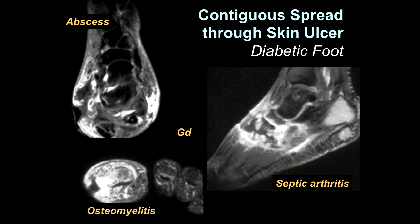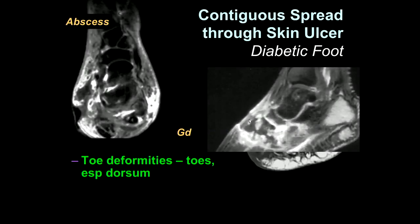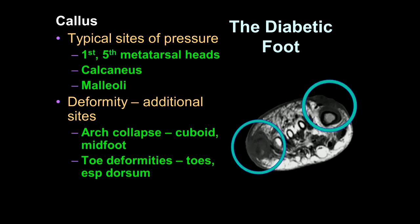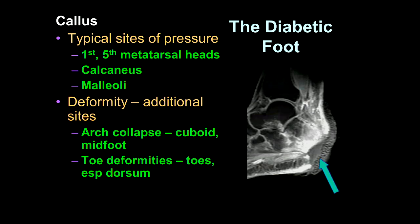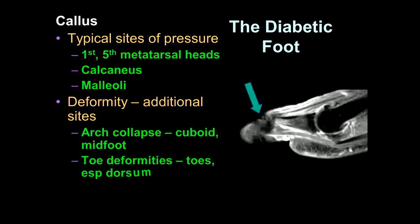The most common manifestation of contiguous spread in our population is in diabetic patients through ulcerations of the foot. These can occur in different locations based on footwear and other conditions. We typically see these in pressure points over the first and fifth metatarsal heads, over the calcaneus especially in bedridden patients, and over the malleoli. You also see them in areas of deformity — if patients have collapse of the arch, you'll see it under the cuboid; and if patients have claw toe deformities, you'll see them over the dorsum of the toes, especially if they have ill-fitting footwear.